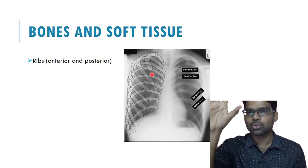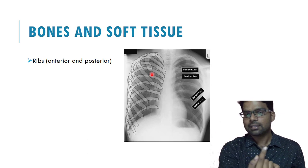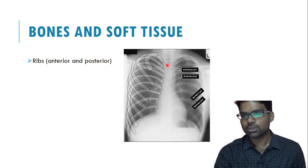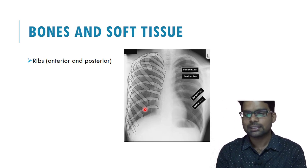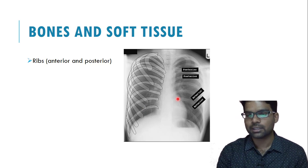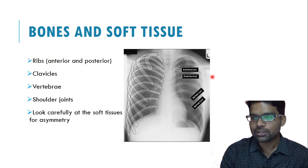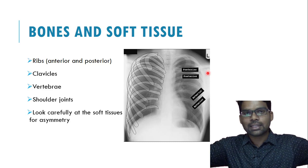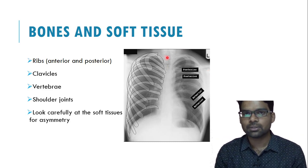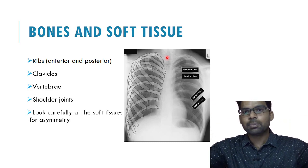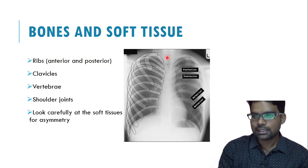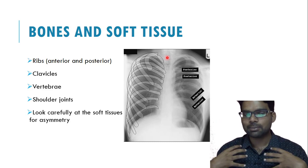Posterior ribs are clearly visible; anterior ribs are traced obliquely from anterior to posterior. Other things to look for: clavicles are almost horizontal in PA film and vertically placed in AP film; vertebral bodies and intervertebral disc spaces are barely visible in a normal chest X-ray; shoulder joints and acromioclavicular joints are high in AP film and at the level of the lung apex in PA film. Look for any asymmetry between right and left sides - any asymmetry is pathological.